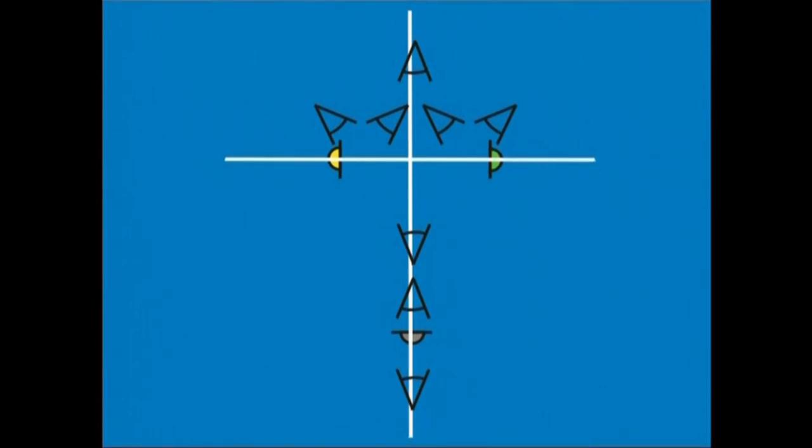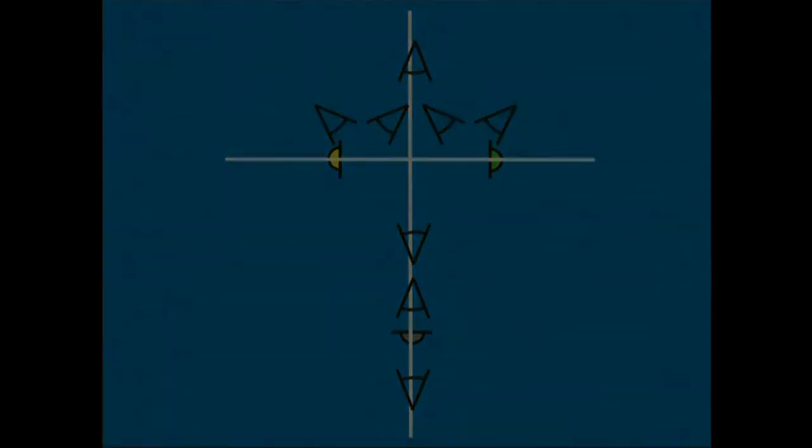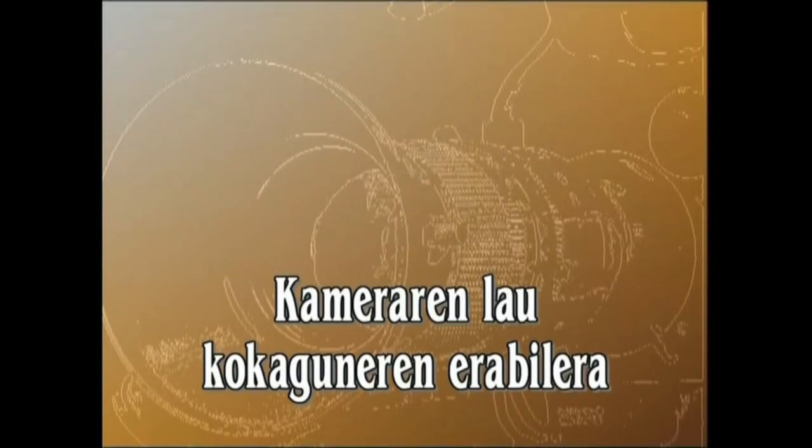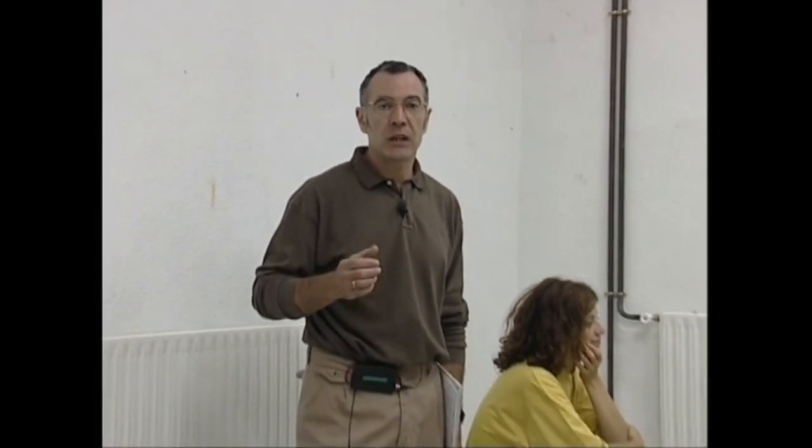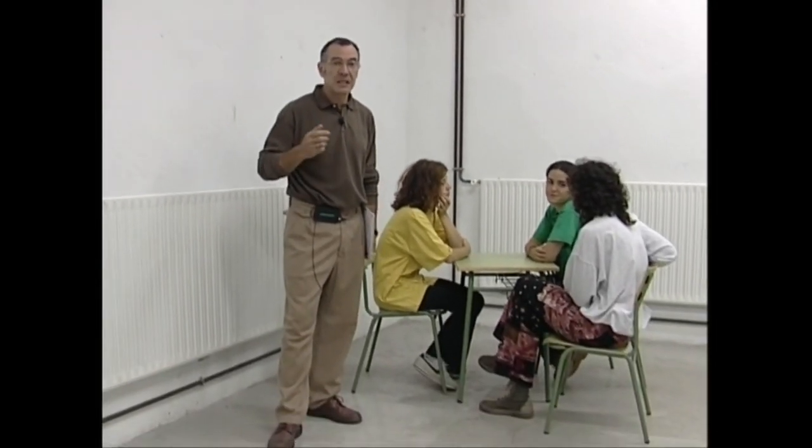Era honetako eskena bat filmatzeko ditugun aukera ezberdinak aztertuko ditugu. Esan daiteke iru aktorez osatutako talde bat filmatzeko, euretako bat aldian-aldian baztertuz, kanpoaldeko angelu kontrajarrietan bi kokagune erabiltzea nahikoa dela. Ondoren ikusiko dugun adibidean antzeko zerbait egingo dugu, baina kasu honetan bikoiztua: lehen eta bizi aktoreetako bat baztertuko dugu, eta ondoren beste bat. Kamera kanpoaldeko angelu kontrajarrietan lautokitan jarriko dugu, bi kokagune ekintzaren ardatz bakoitzeko. Ikus dezagun adibidea, pausoz pauso.